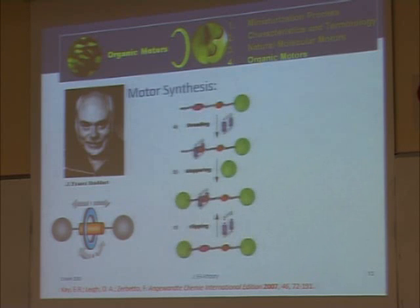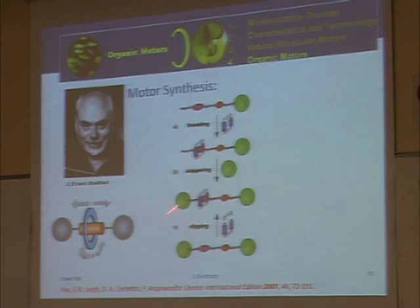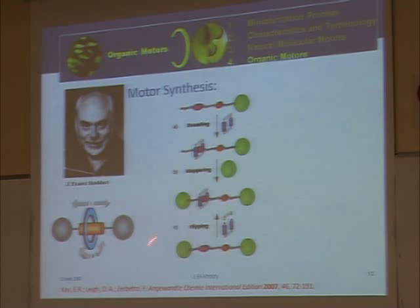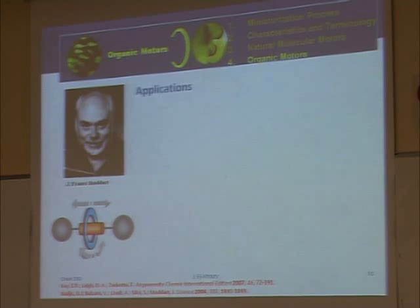How do you synthesize these systems? Simply, first you could have the macrocycle done, then thread it through the pseudo-rotaxane, which is an unfinished rotaxane, then stop it — now it is stuck between the two bulky groups and moves forward and backward. Or the other method is by synthesizing the rotaxane and then clipping the macrocycle around it.